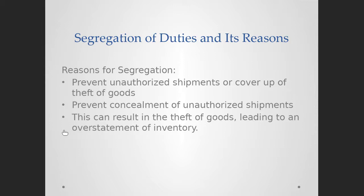Even if they're not the one stealing, if a person is responsible for making sure nothing is stolen and it is stolen while they are on guard, and they also have access to change the records, they can manipulate those records to hide the theft. For example, if there were 50 boxes and five were stolen, they could change the record from 50 to 45, hiding the theft. Segregating duties does not give them the luxury to change records without authorization.